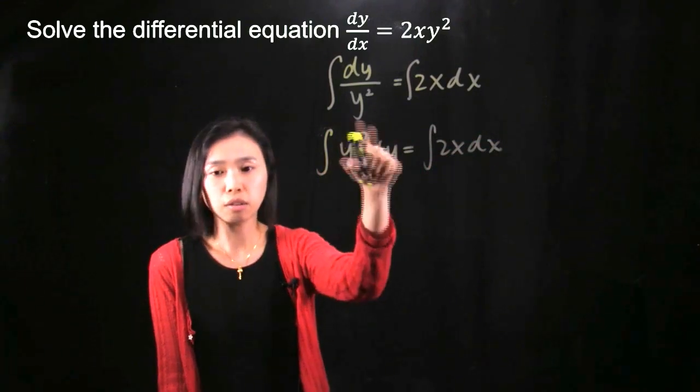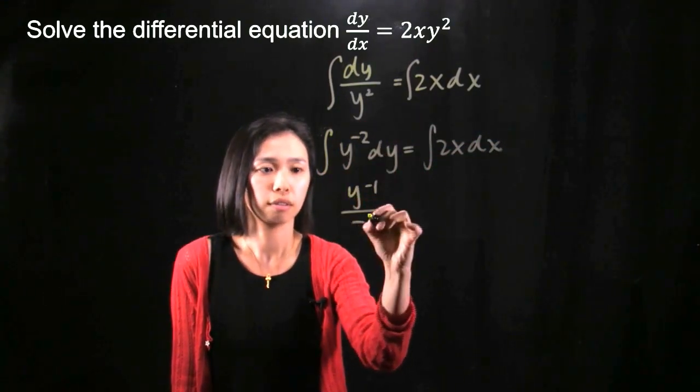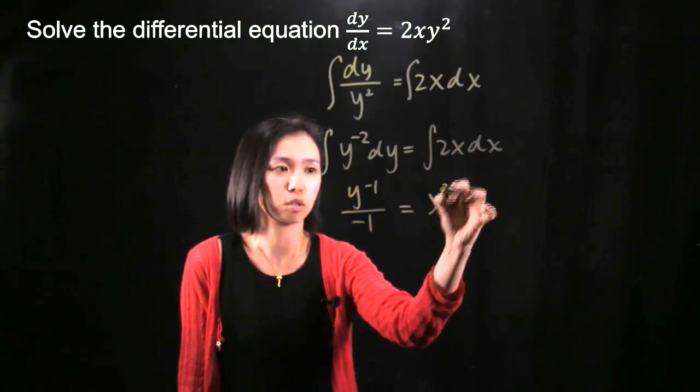So integrating y to the power of negative 2 results in that. And integrating 2x, you've got x squared.